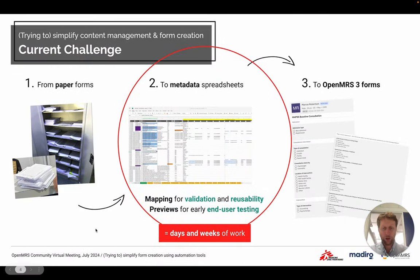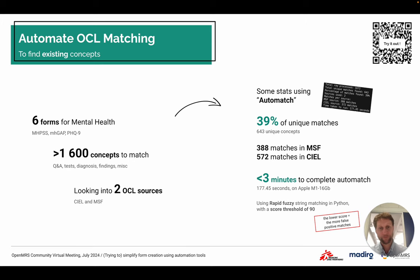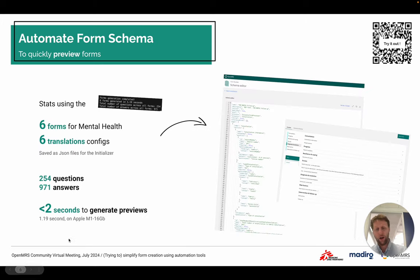Going back to mental health forms, we actually started in Iraq with six mental health forms for which we had 1600 concepts, including questions and answers. We wanted to look into two sources — CL and MSF. Using the small script, it took less than three minutes to complete the auto-match, which gave us almost 40% matches — so it saved a lot of time for the content management team. Same for the preview of the forms: to generate the six forms and their translations, it took less than two seconds, so that's 254 questions and almost 1000 answers.